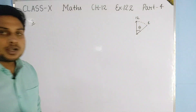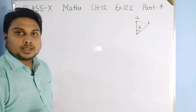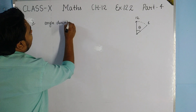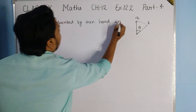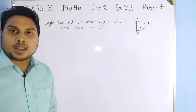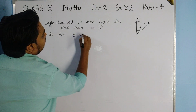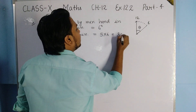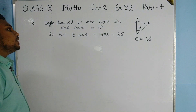As taught in Part 3, the minute hand describes 6 degrees per minute. So in 5 minutes the angle described is 5 × 6 = 30 degrees. Therefore theta = 30 degrees and radius r = 14 cm.